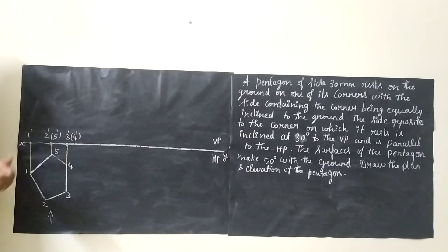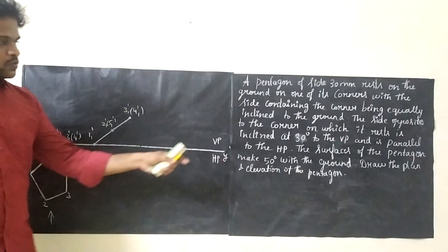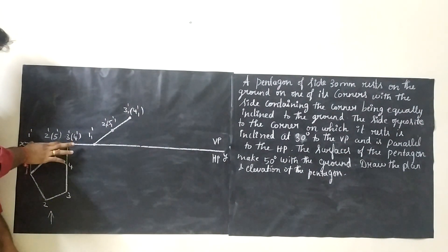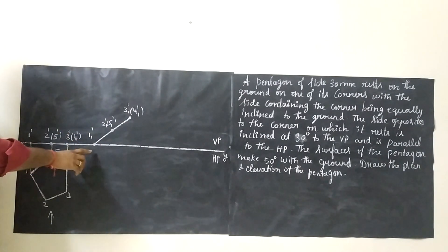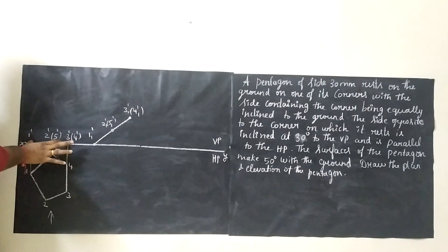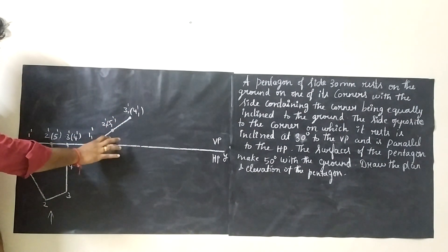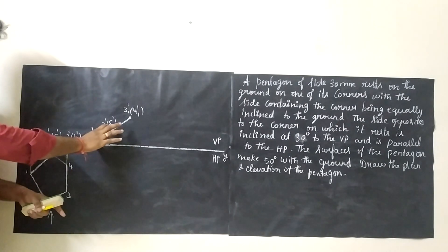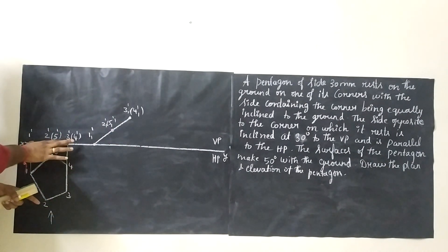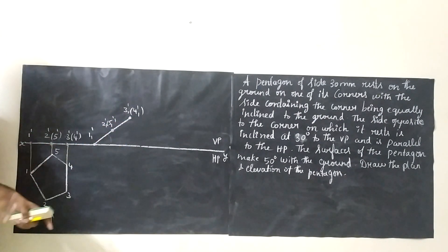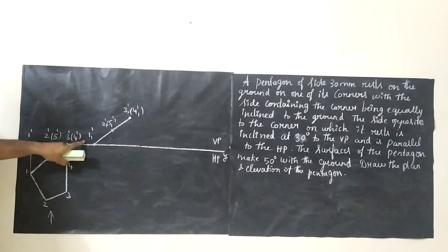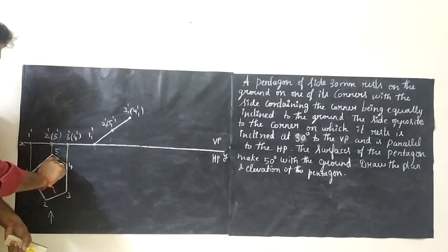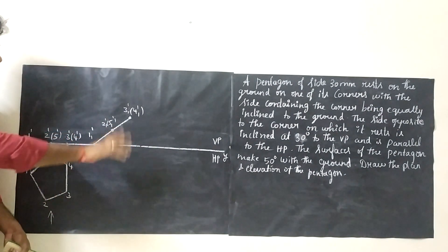Next we proceed with surface inclination. The surface of the pentagon makes 50 degrees to the ground. Take your scale, measure this line, leave some space, and keep your point anywhere on the reference line. Measure this distance and keep it at an angle of 50 degrees — so the angle between the reference line and this line will be 50 degrees. Do the same for all points: measure and place 2-dash, 1-dash, etc., keeping the same distances at 50 degrees. Then extend all 3 points vertically and all 5 points horizontally.